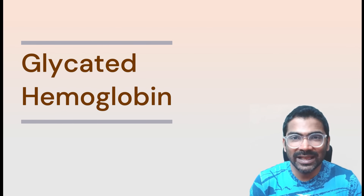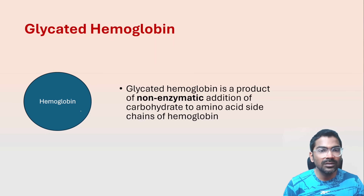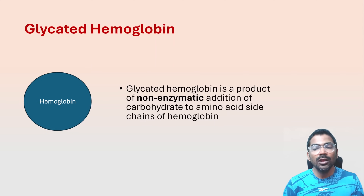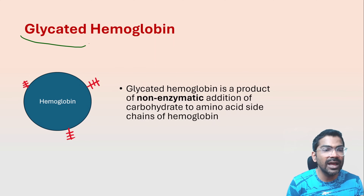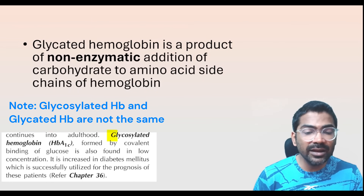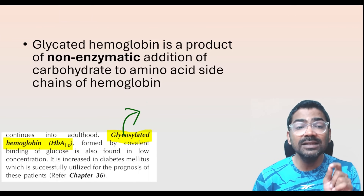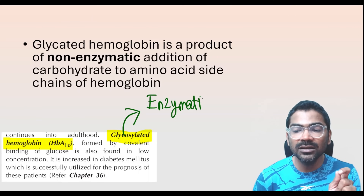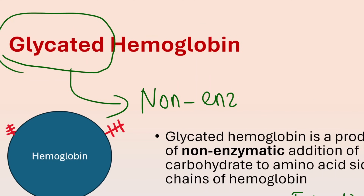Glycated hemoglobin is a product of non-enzymatic addition of carbohydrate to amino acid side chains of hemoglobin, which is made up of heme and four globin chains. Adding carbohydrates without the help of any enzymes is called glycation. Some books mention glycated hemoglobin as glycosylated hemoglobin, which is wrong. Glycosylation is enzymatic and always covalent, whereas glycation is always non-enzymatic.